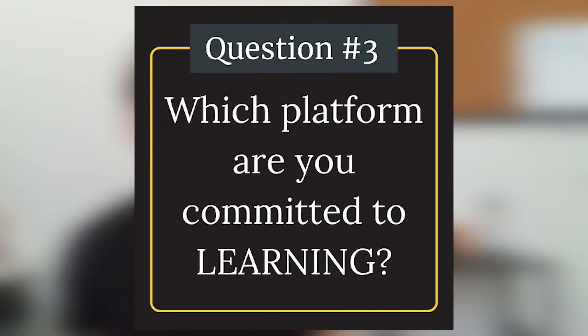Question number three: which social media platform are you committed to learning? Social media results don't come right away, and the typical reason is because you're not going to be good at it when you first start. Every platform has a learning curve, not to mention they're all introducing new features all the time, taking some features away, algorithms change, audiences are changing. You really have to do a lot to keep up with what is effective on one platform at a time. If you start spreading yourself to two, three, four platforms, you're going to start spreading yourself too thin. Choose one to learn and to master.